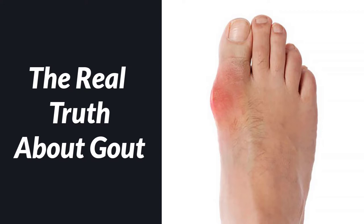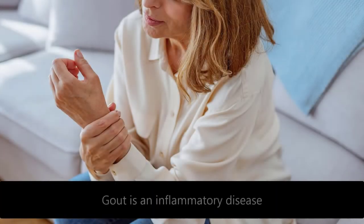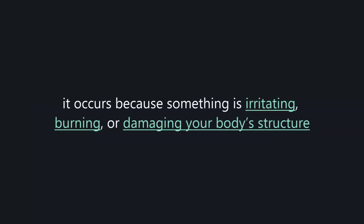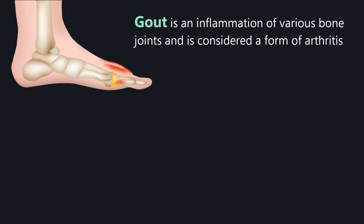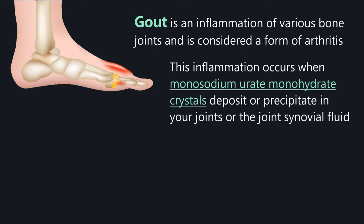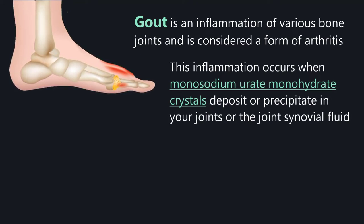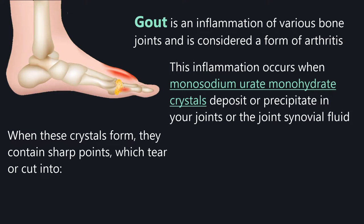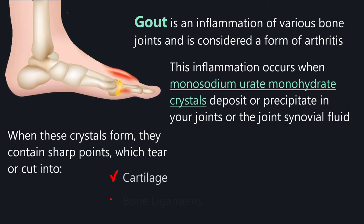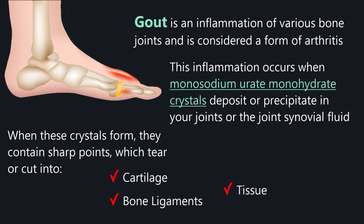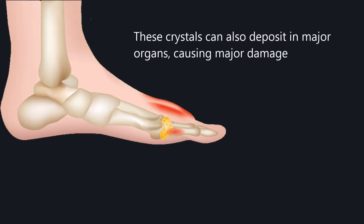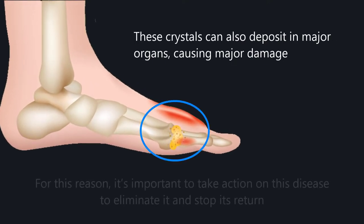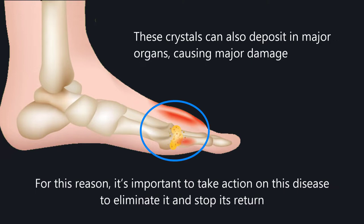Gout is an inflammatory disease. Inflammation occurs when something is irritating, burning, or damaging your body's structure. Gout is an inflammation of various bone joints and is considered a form of arthritis. This inflammation occurs when monosodium urate monohydrate crystals deposit in your joints or joint synovial fluid. These crystals have sharp points which tear into cartilage, bone, ligaments, and tissue causing great pain. The crystals can also deposit in major organs, causing serious damage, making it important to eliminate this disease and stop its return.